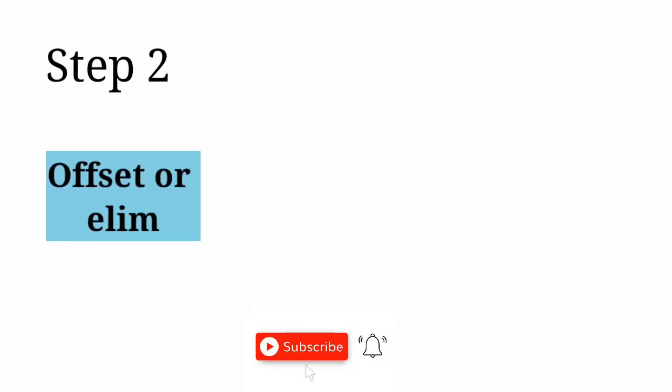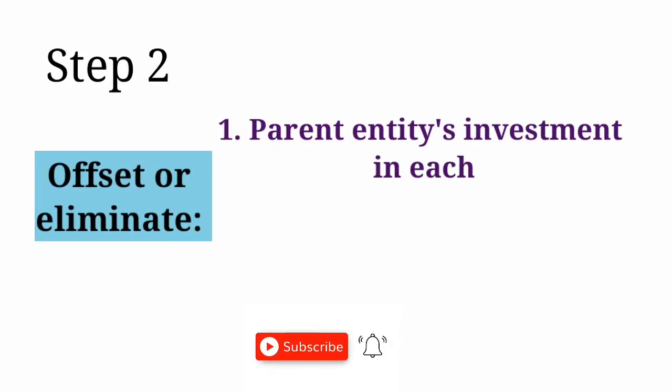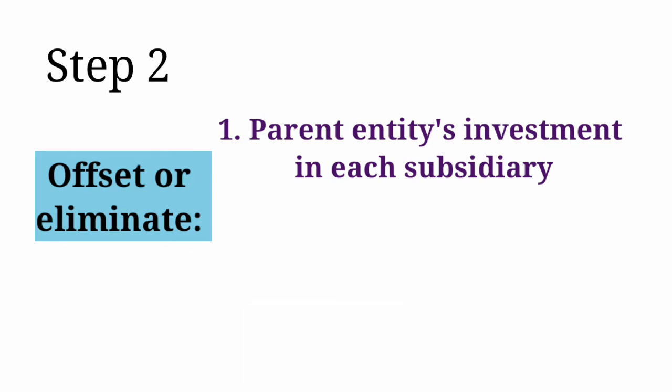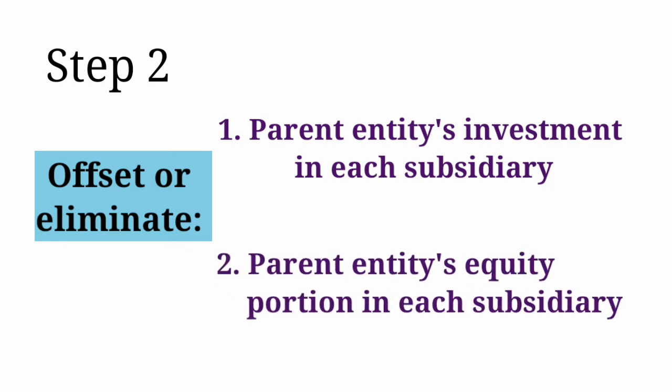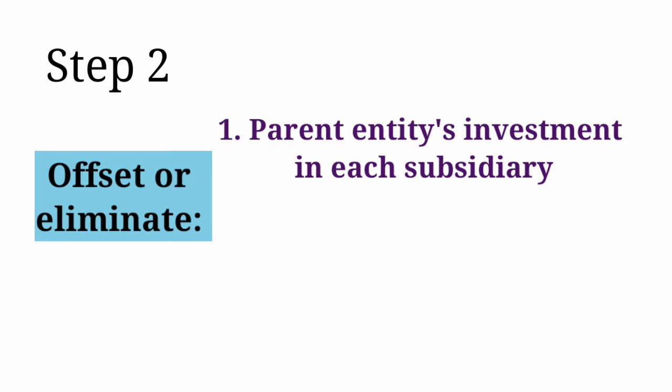Step 2: Offset or eliminate the carrying amount of the parent's investment in each subsidiary and the parent's portion of equity of each subsidiary.